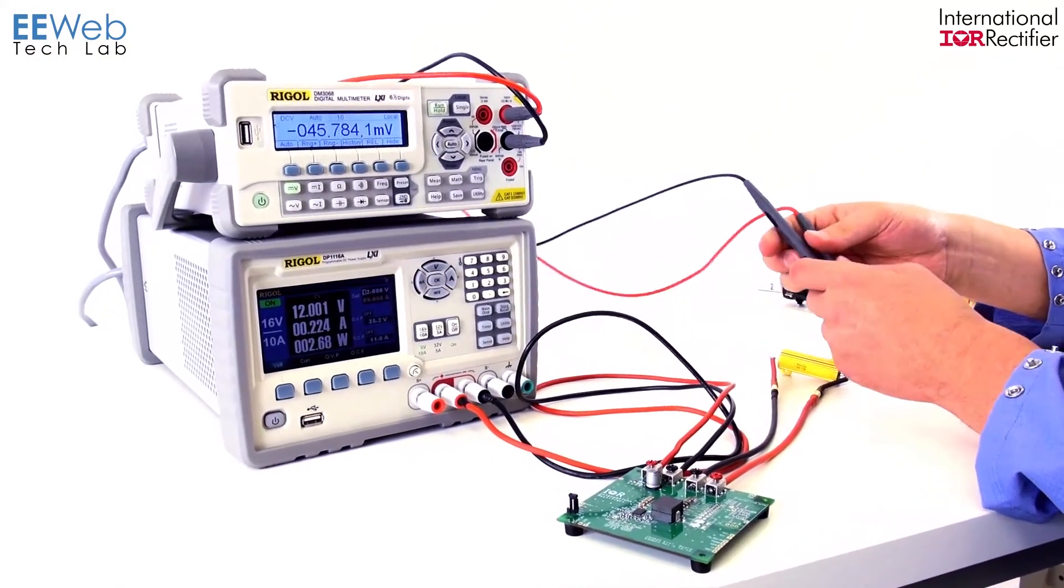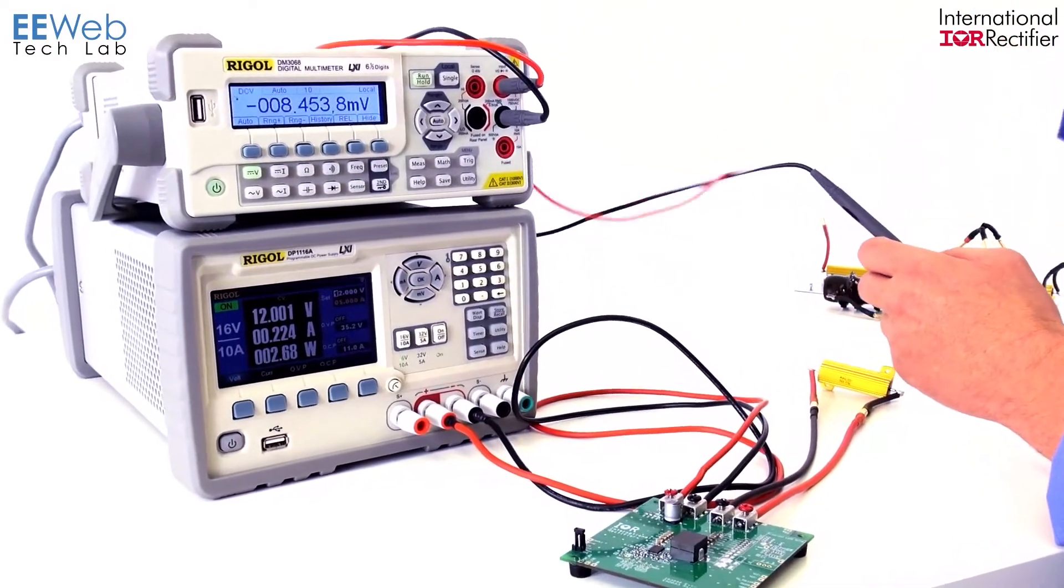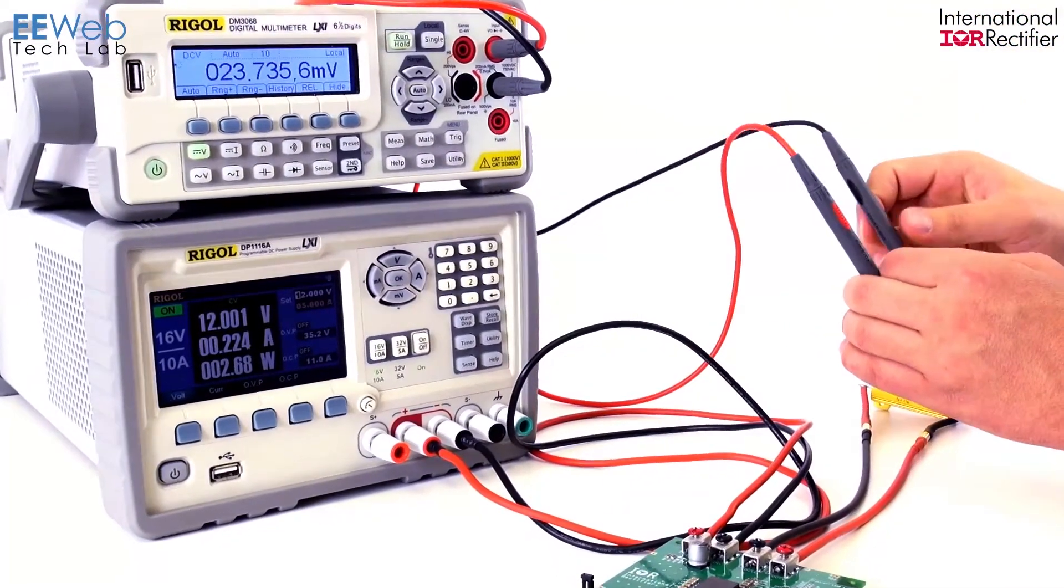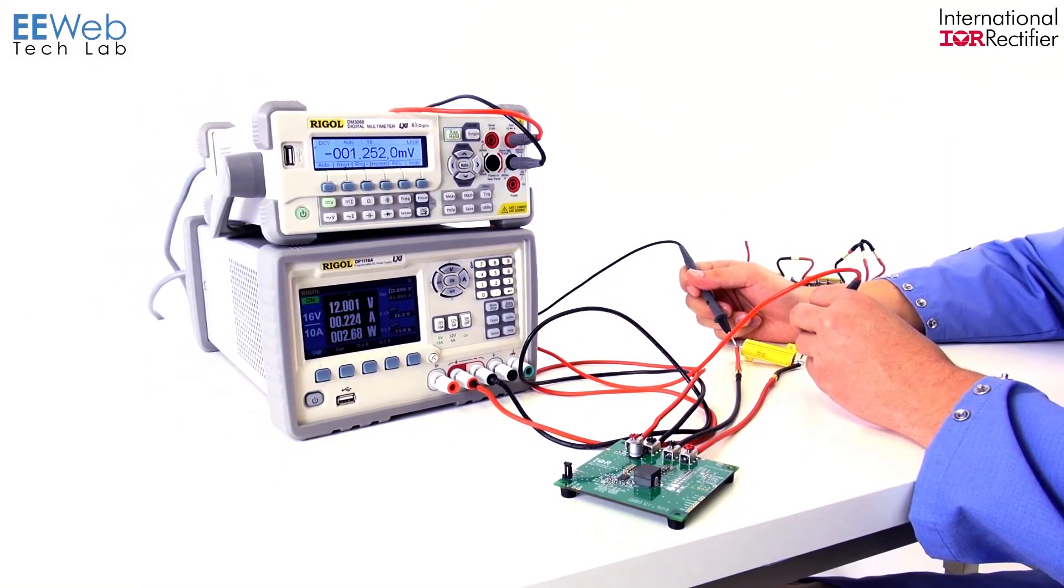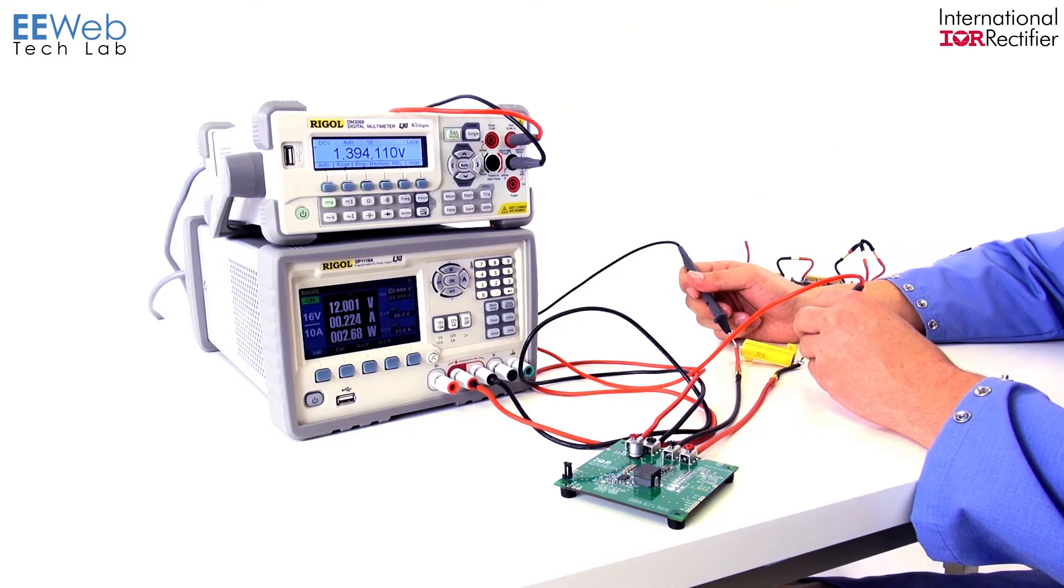So whatever our voltage is, since we have a 1 ohm resistor, remember V equals IR. If R equals 1, then V equals I, and we're getting about 1.4 volts, should be about 1.4 amps.